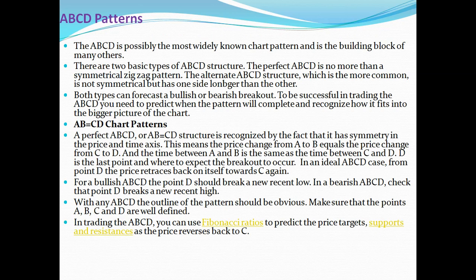The ABCD pattern is possibly the most widely used chart pattern in trading. There are basically two types of ABCD structure. The perfect ABCD is no more than a symmetrical zigzag pattern. The alternate ABCD structure, which is more common, is not symmetrical but has one side longer than the other. Both types can forecast a bullish or bearish breakout. To be successful in trading ABCD, you need to predict when the pattern will complete and recognize how it fits in the bigger picture of the chart.